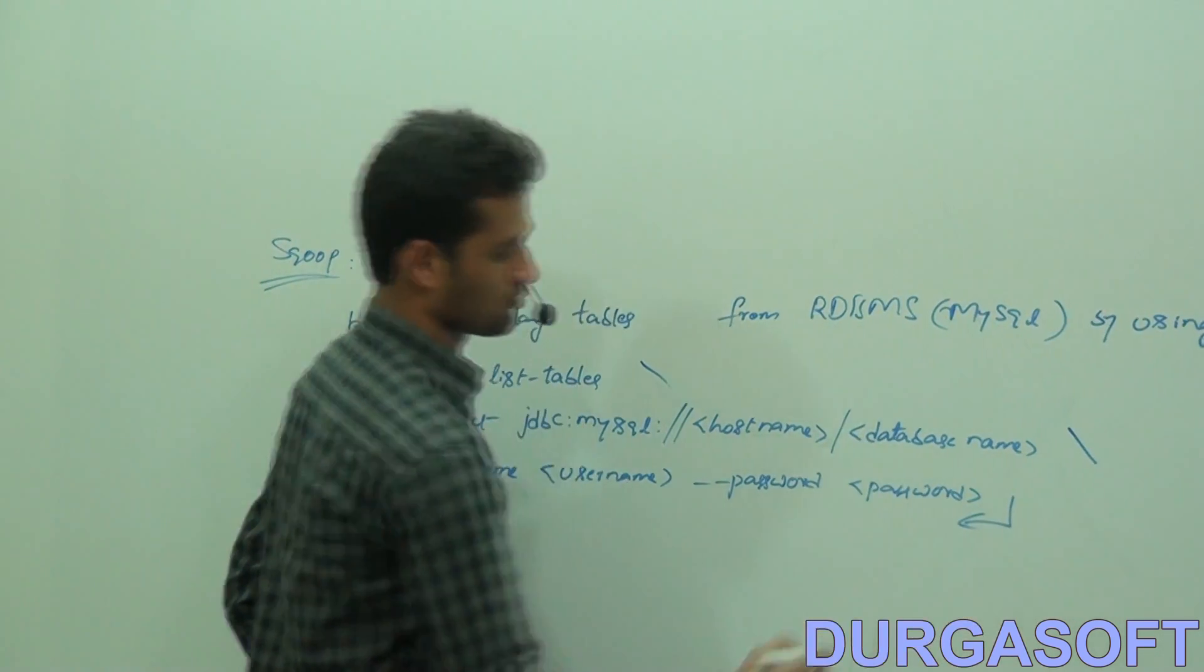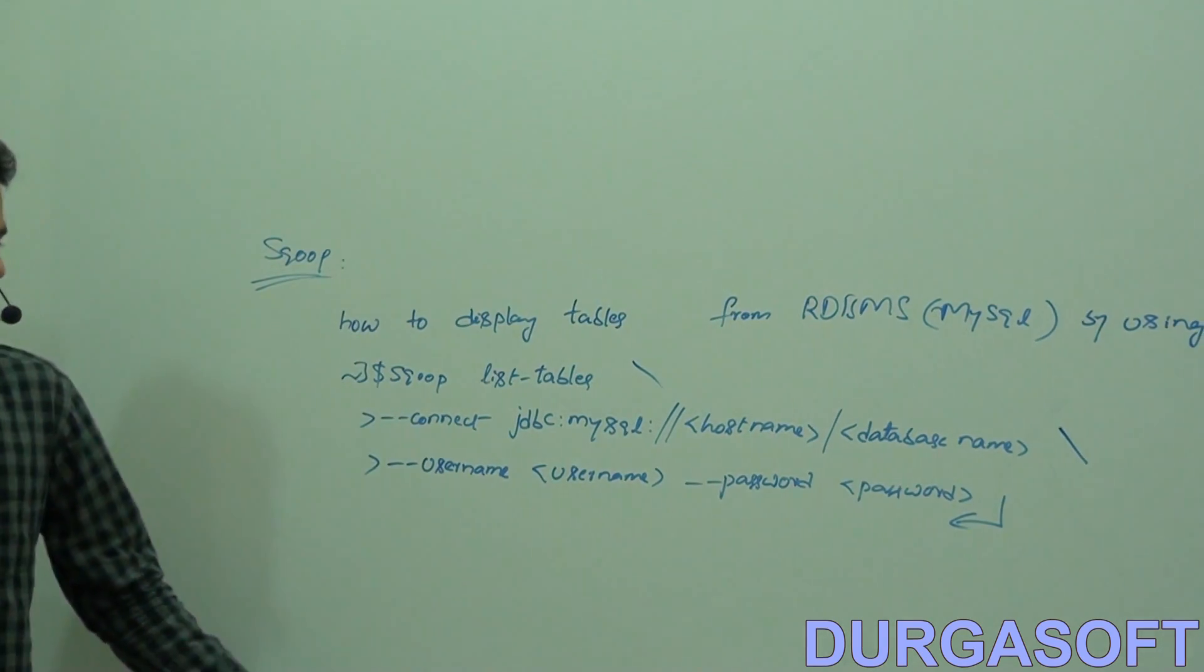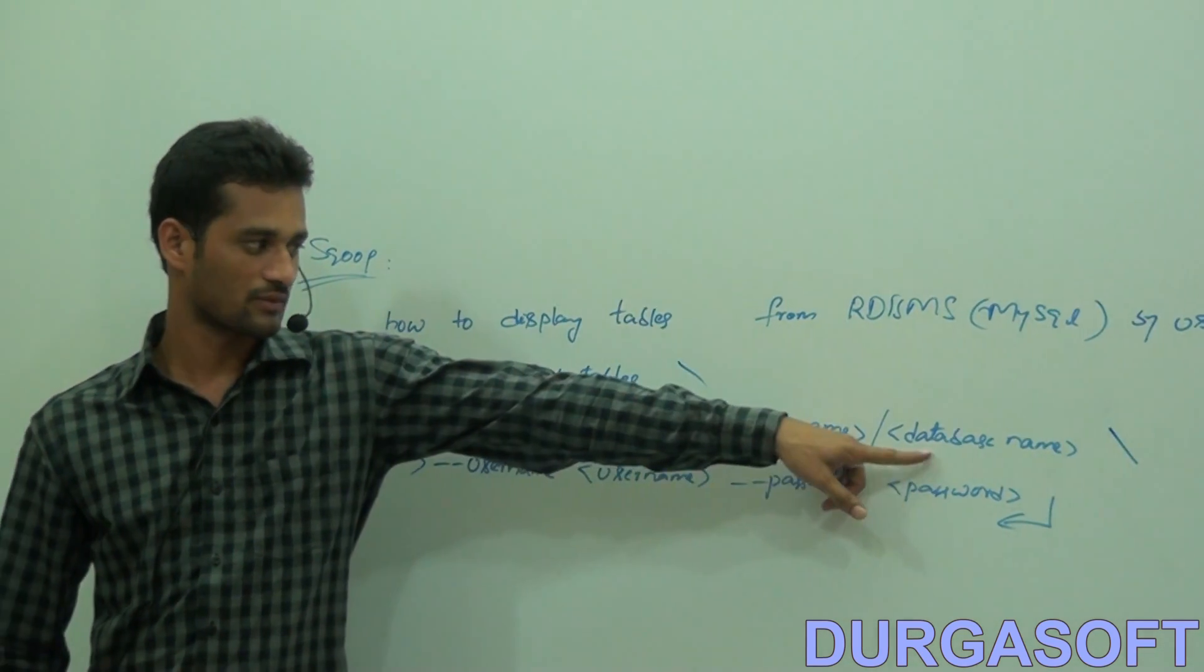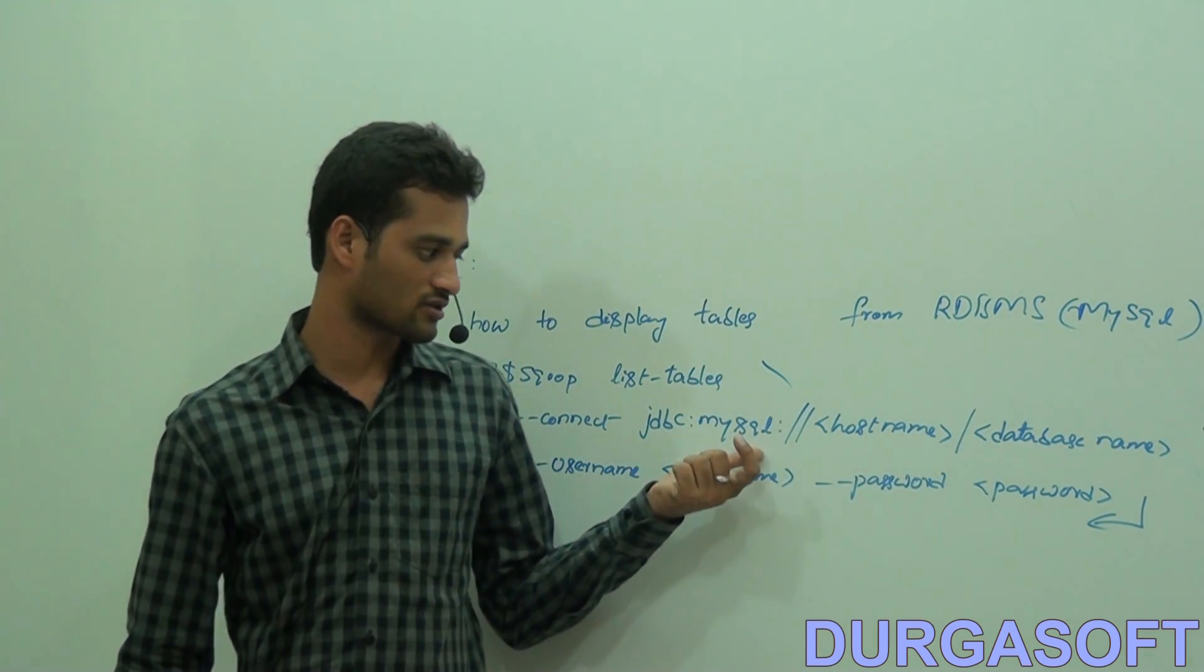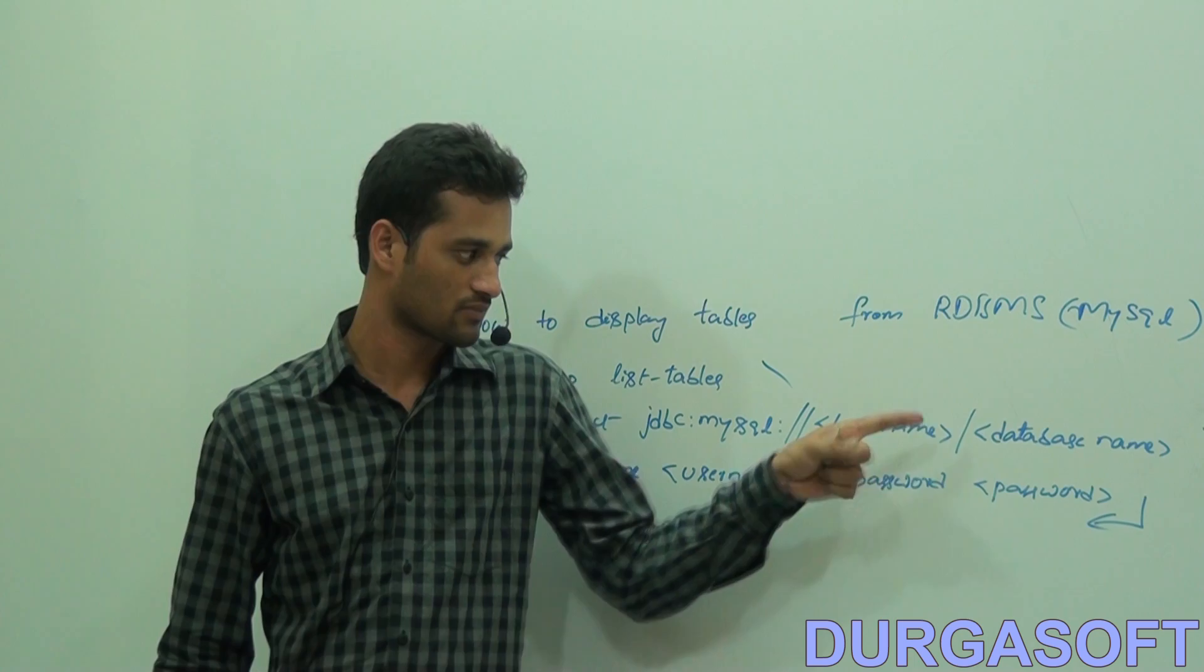Just hit enter. This command is for listing out number of tables from this database. Give that URL with jdbc colon mysql colon two forward slashes, that hostname.